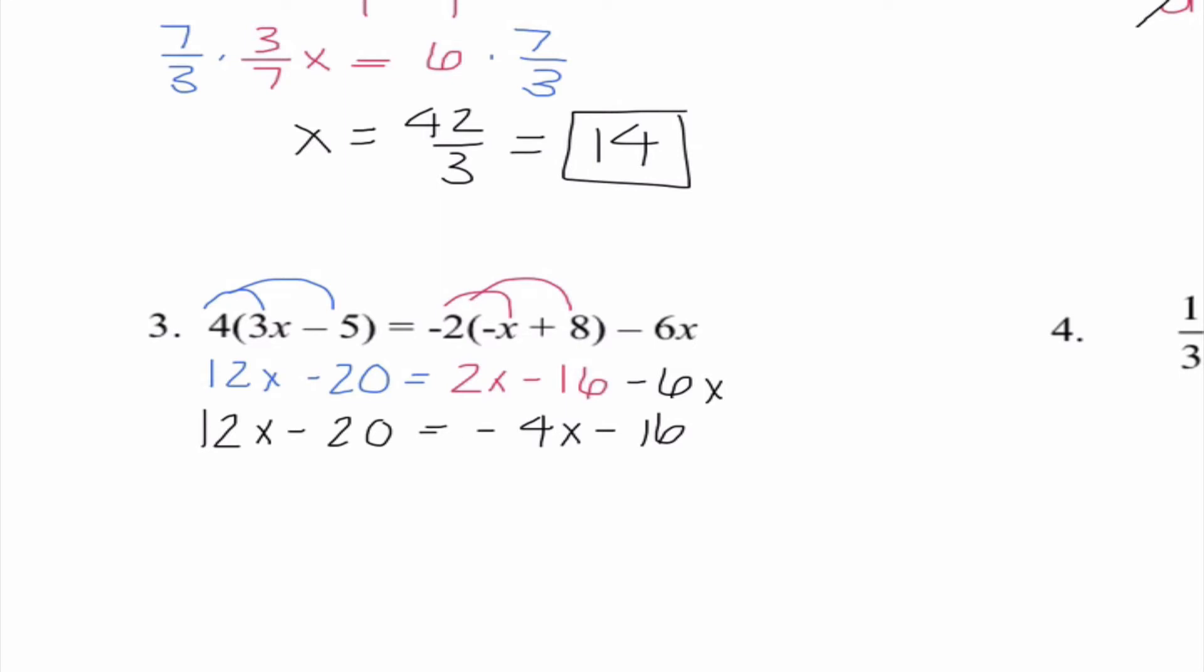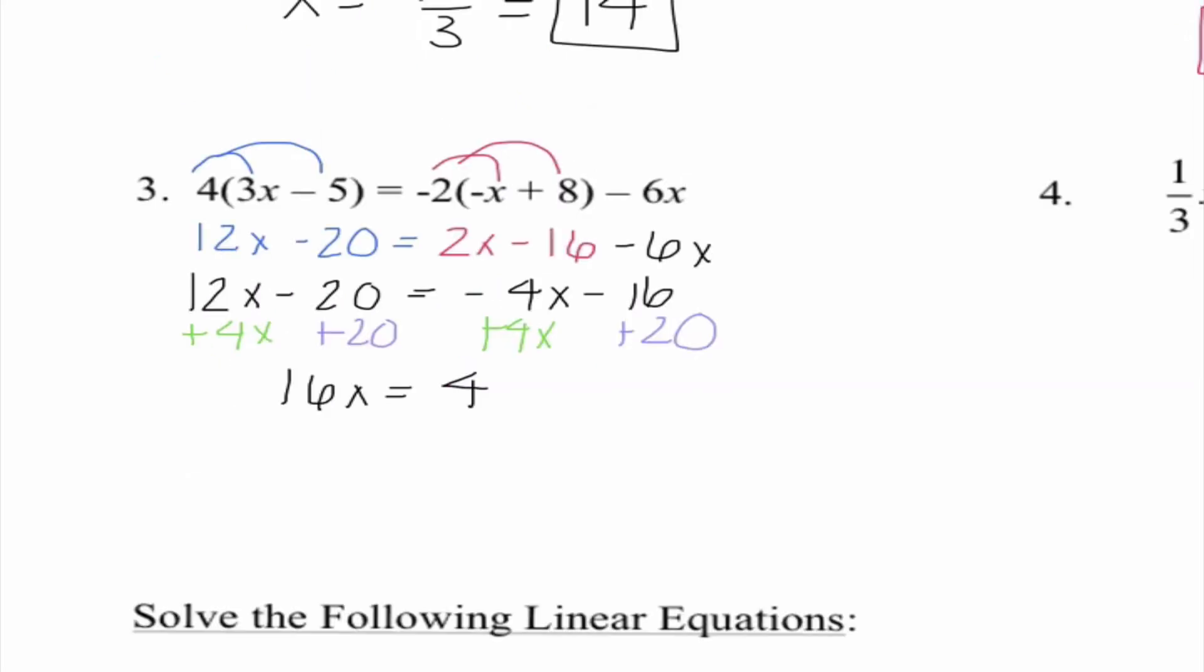Now we're at a point where this problem is very similar to what we did in number 2. So I'm going to put my x's on one side and my constants on the other side. So I'm choosing to add 4x to both sides and add 20 to both sides. But if you wanted to get the x's on the right side of the equation and the constants on the left side of the equation, you would end up with the same exact answer in the end if you were doing all the steps correctly. So we end up with 16x equals 4. And I'm going to go ahead and divide both sides by 16. And I know that 16 does not go into 4 evenly. However, this is a fraction I can reduce. And it's important that we always reduce our answers. 4 goes into both the numerator and the denominator. So the best answer I could give here is 1/4.